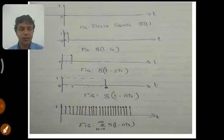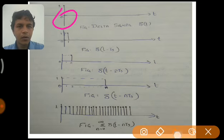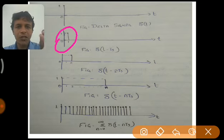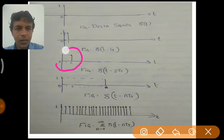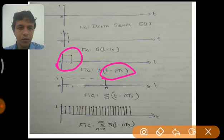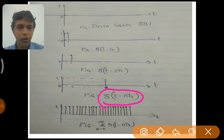Here is a delta signal at time t equal to zero. This is a time-shifted delta signal shifted by one unit, so we represent it as delta of t minus Ts. This is a time-shifted delta signal shifted by two units, represented as delta of t minus 2Ts — we have the pulse at t equal to two. When we have the pulse at t equal to n, we represent it as delta of t minus nTs.